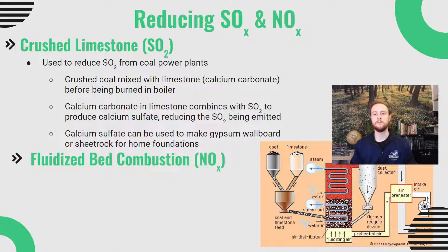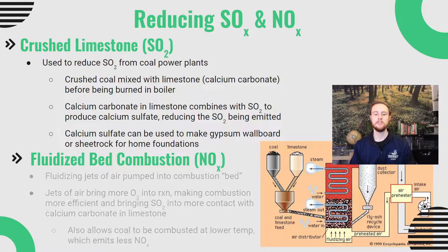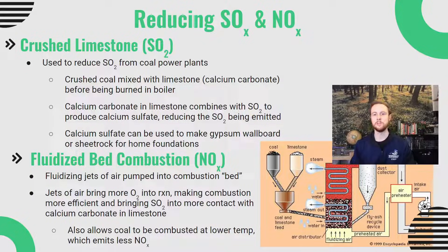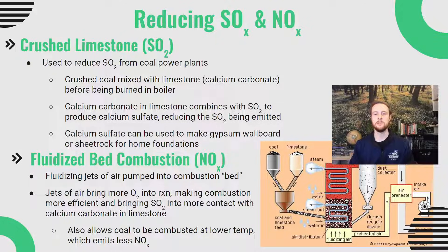We can also use fluidized bed combustion to reduce NOx levels. This involves blasting jets of air at the bottom of the boiler, turning the coal-and-limestone mixture into an almost fluid, bubbling bed. This oxygen mixing makes combustion far more efficient, causing more SO₂ to come into contact with the calcium carbonate and capturing more of it. Crucially, it also allows coal to be burned at lower temperatures, and reducing combustion temperatures is an effective way to reduce nitrogen oxide (NOx) emissions.